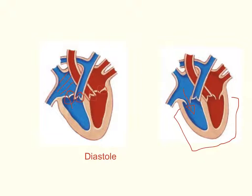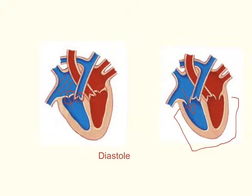Sometimes examiners may refer to atrial systole occurring at the same time as ventricular diastole, showing that the ventricles are relaxing as the atria are contracting. It's unlikely to come up in the exam, but it's useful to know the meanings of systole and diastole.